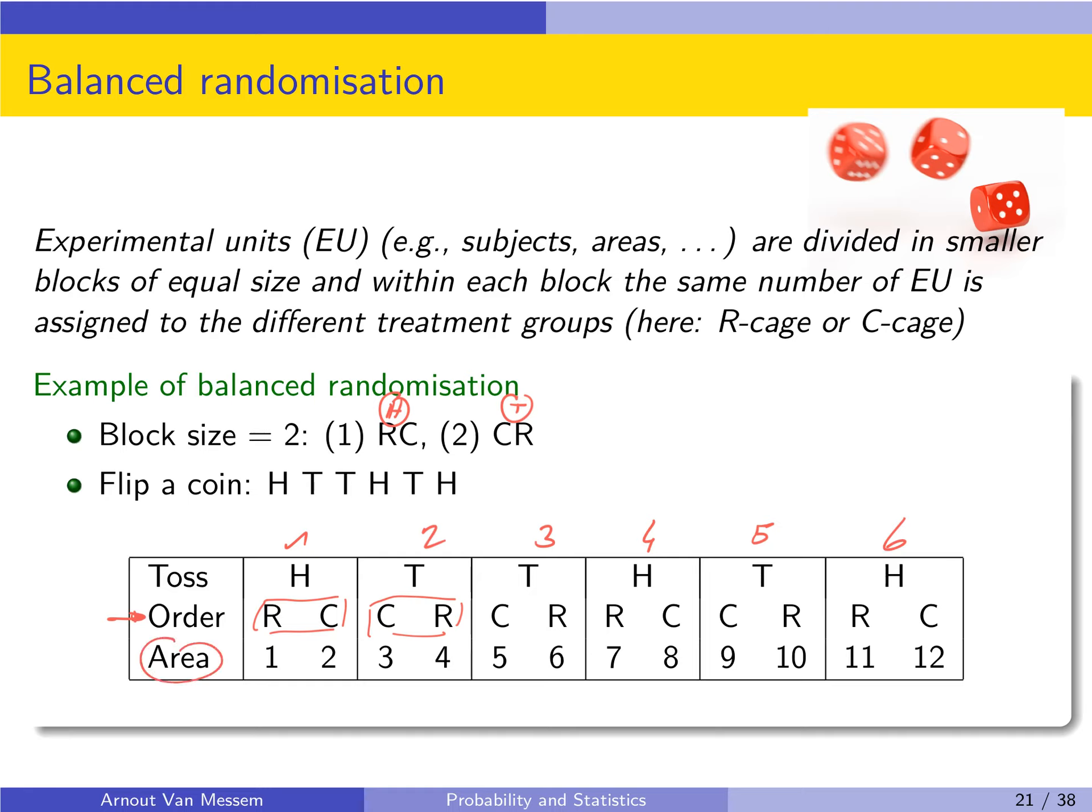Additionally we can also randomize the area. So instead of just putting them in order 1, 2, 3 up to 12, we could randomly assign these as well. So here you could have a randomization of 1 and 2 in the first block, randomization of 3 and 4 in the second block, and so on.